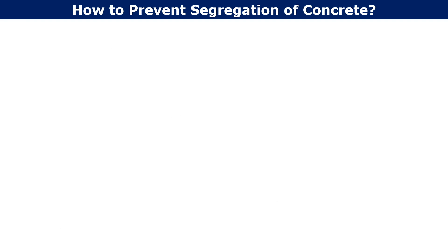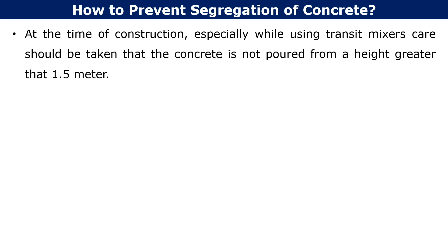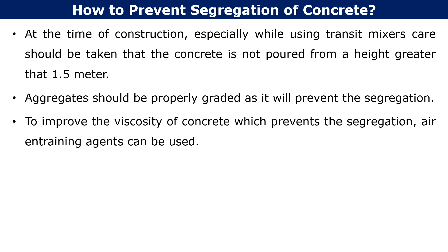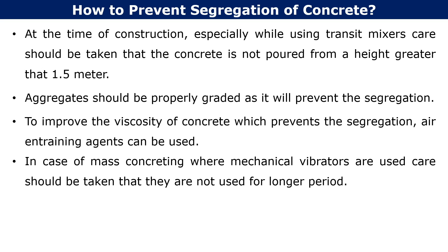To prevent segregation of concrete: at the time of construction, especially while using transit mixers, care should be taken that the concrete is not poured from a height greater than 1.5 meters. Aggregate should be properly graded as it will prevent segregation. To improve the viscosity of concrete and prevent segregation, air entraining agents can be used. In case of mass concreting where mechanical vibrators are used, care should be taken that they are not used for a longer period.